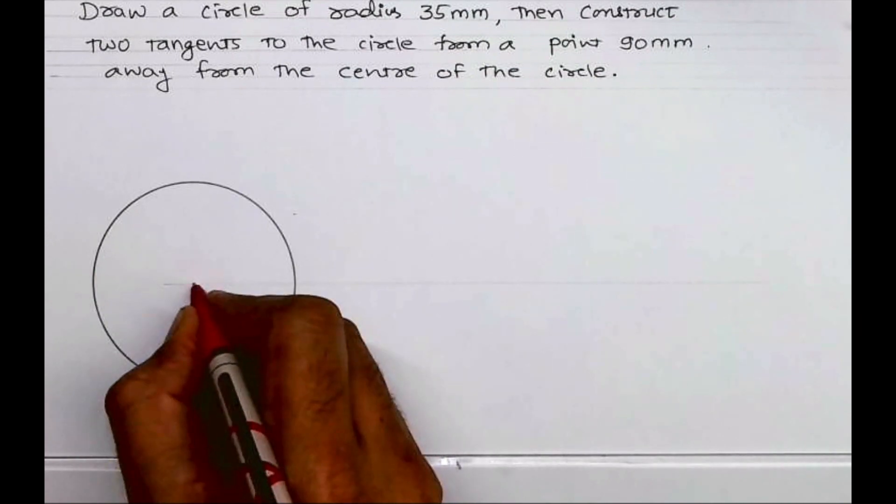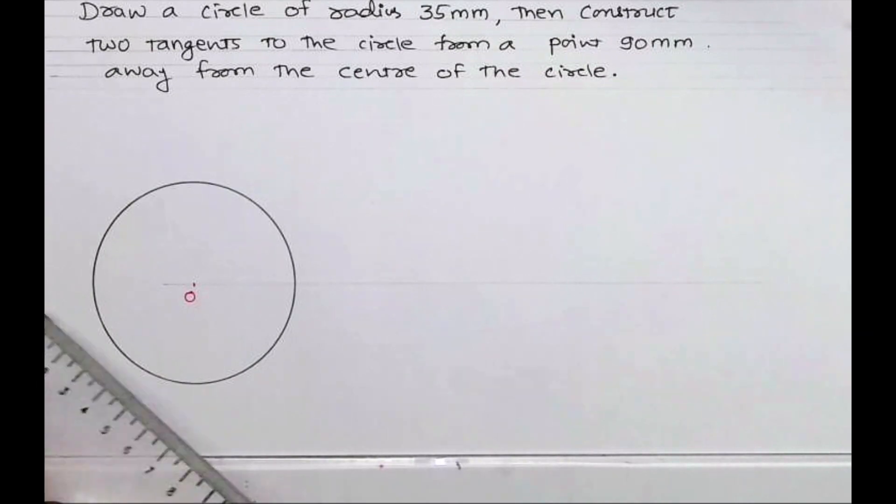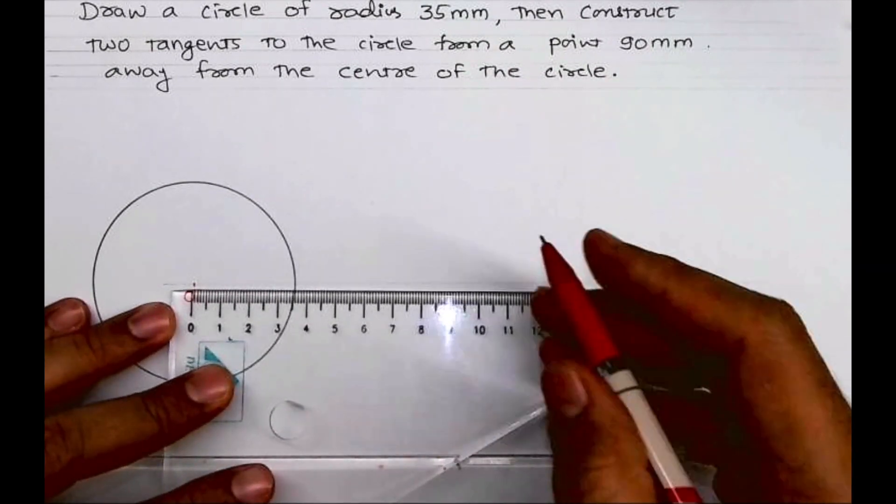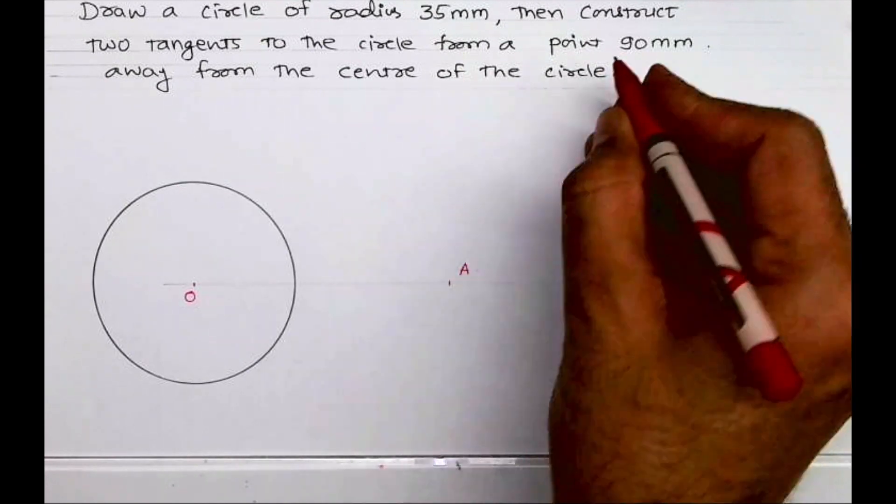Let's say this is point O, and A is 90mm away from the circle. We are taking point A which is 90mm away from point O. Now we need to draw tangent from this point A to the circle.